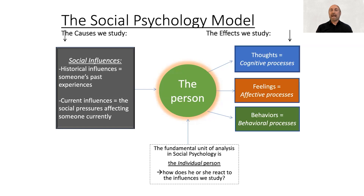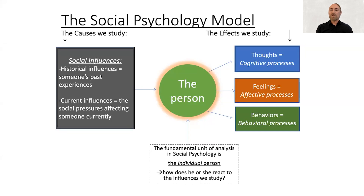There are a number of different reactions we're very much interested in that people show in social situations. There are three boxes on the right side of this diagram. The first, at the top, are the thoughts or beliefs that people show — we call these the cognitive processes. These might include the different types of cognitive reactions you have when you see someone: how do you evaluate them, what do you think about them, what beliefs or stereotypes do you have about them?